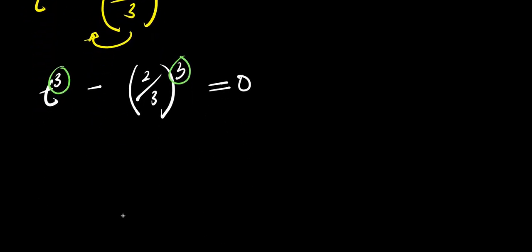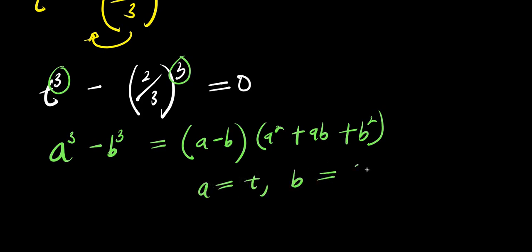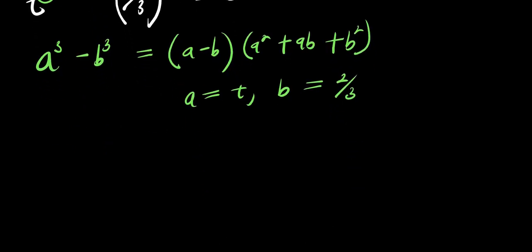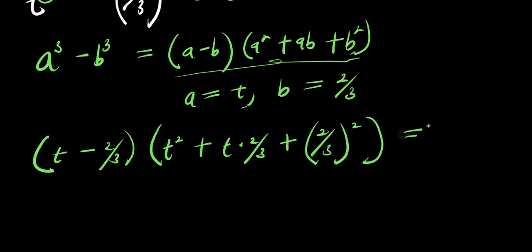So what I'm going to do next will be to apply this identity: if I have a to the power of 3 minus b to the power of 3, this equals a minus b times a squared plus ab plus b to the power of 2. In this case, my a is t and b is 2 over 3. So let me make use of this identity. I'm going to have t minus 2 over 3, times t squared plus t times 2 over 3, plus 2 over 3 to the power of 2, and this equals 0.